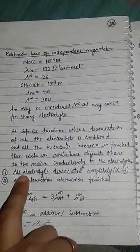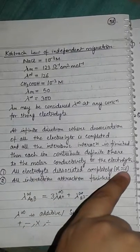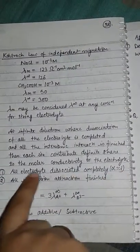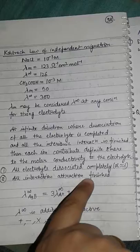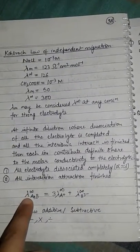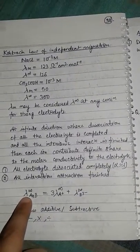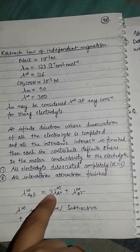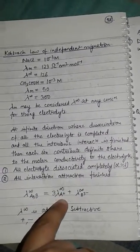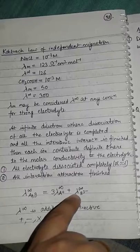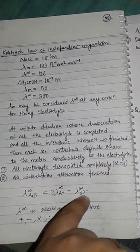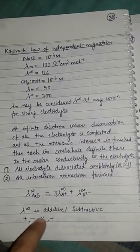First point: all the electrolyte dissociated completely, that is alpha is nearly equal to one, and all interaction attraction finished. Lambda infinity for A3B ion will be equals to three times lambda infinity of A+ plus lambda infinity of B3-. Lambda infinity is additive.